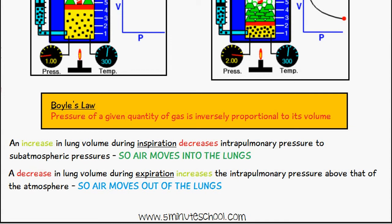When this happens, air is going to move into the lungs. On the other hand, if we decrease the lung volume during expiration, we're going to have an increase in pulmonary pressure above that of the atmosphere, so air is going to move out.